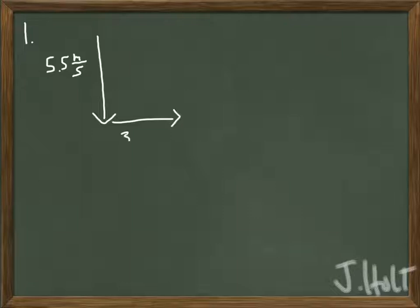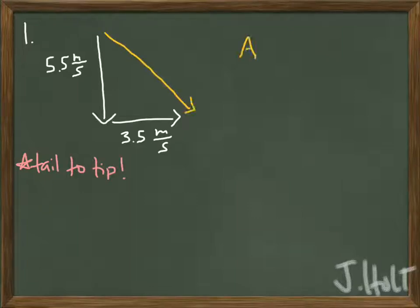we have a descent vehicle landing on Mars. So we're given the y component of the velocity, and we're given the x component of the velocity. Don't forget to add these two vectors tail to tip. If you do them out of order, then you will get the wrong angle.